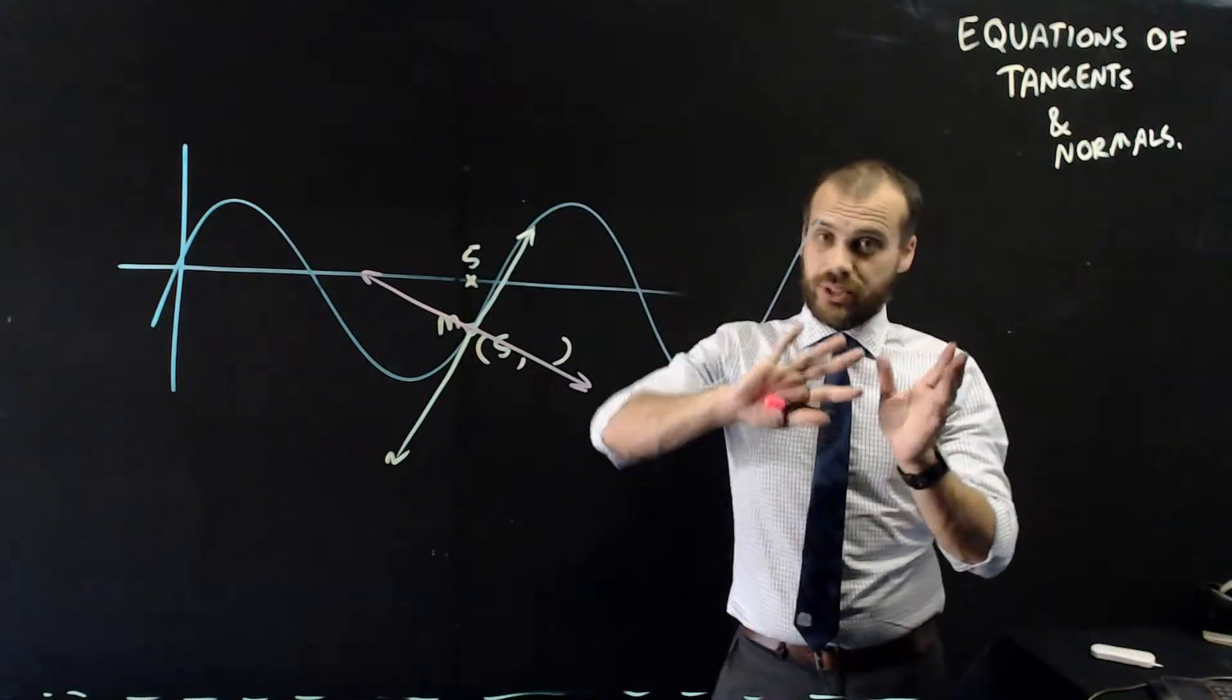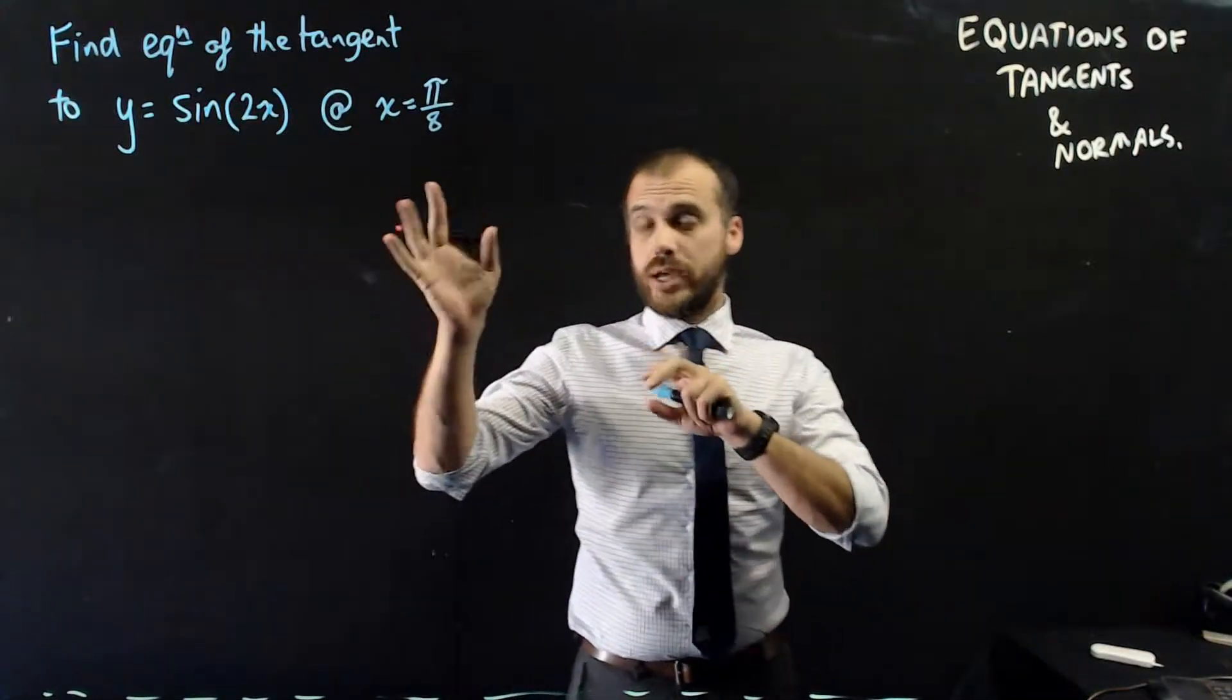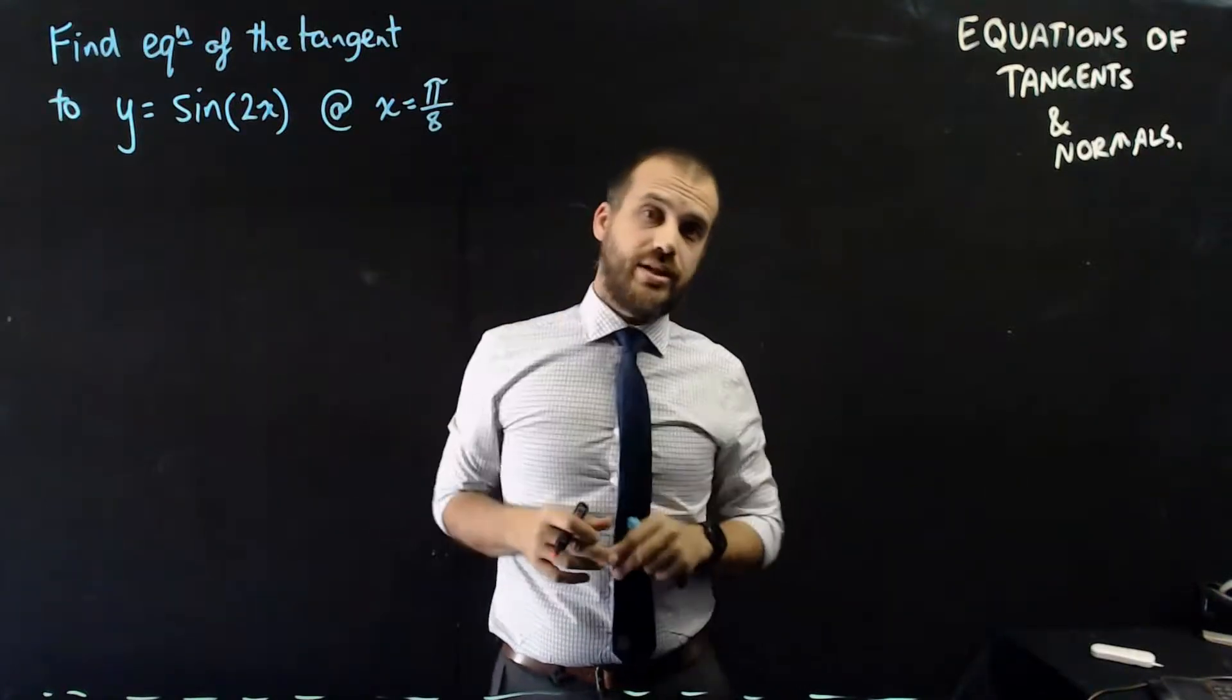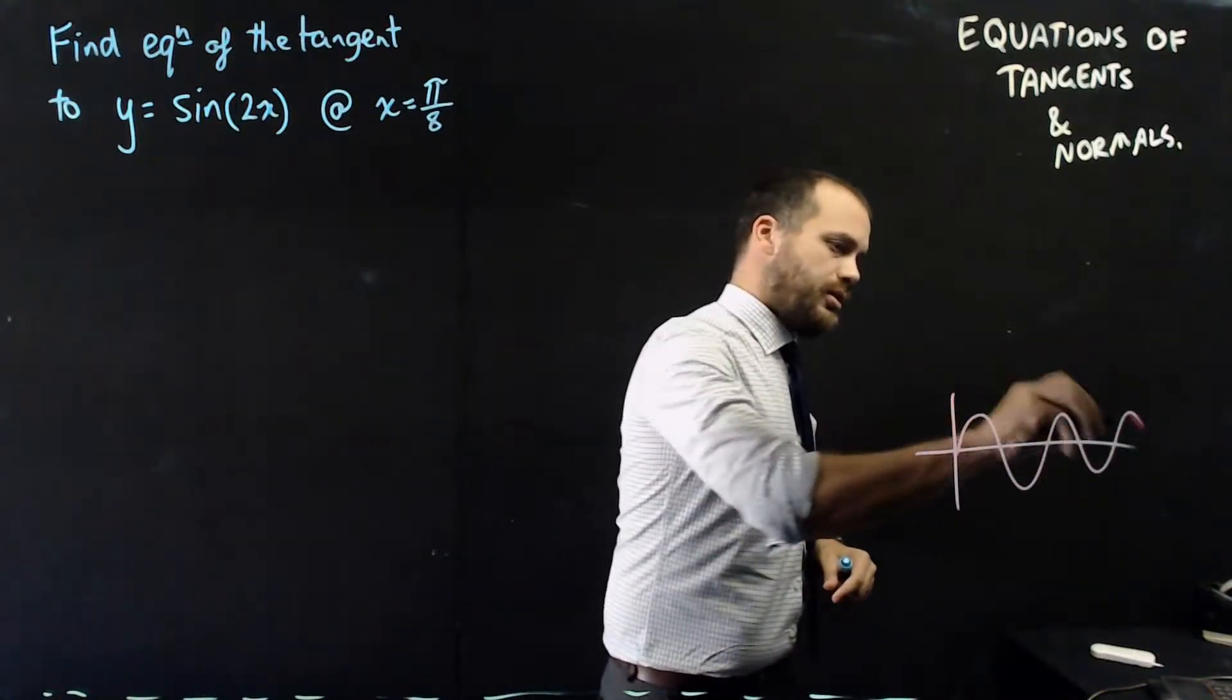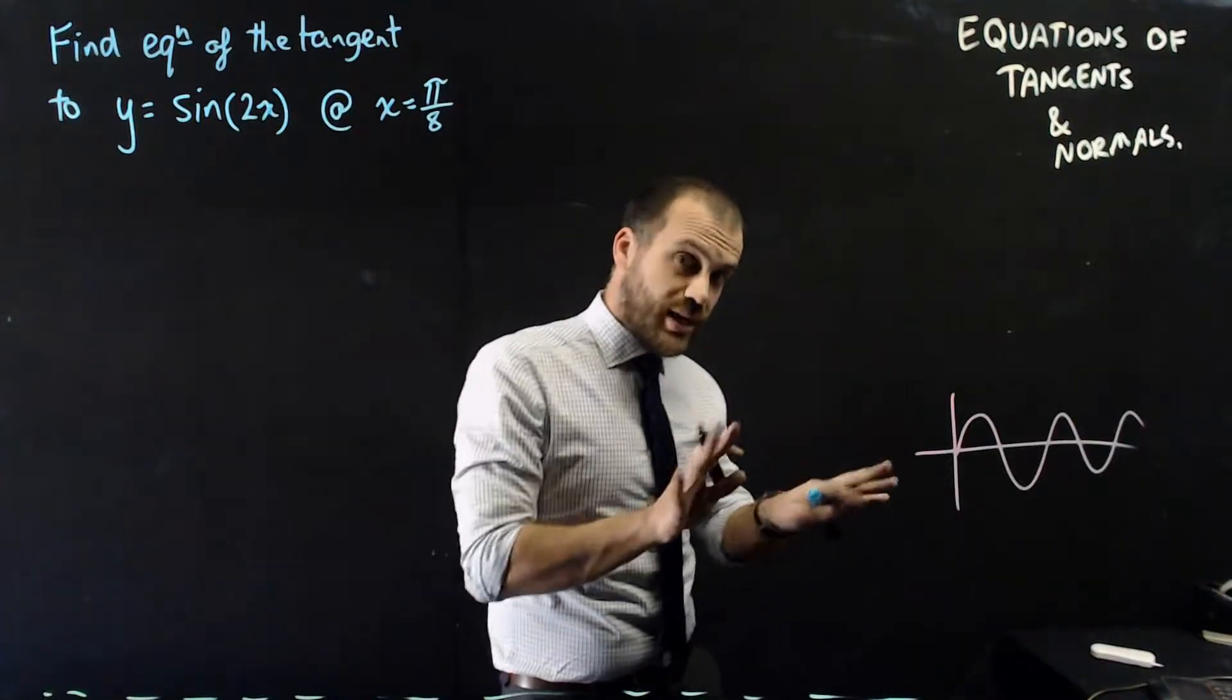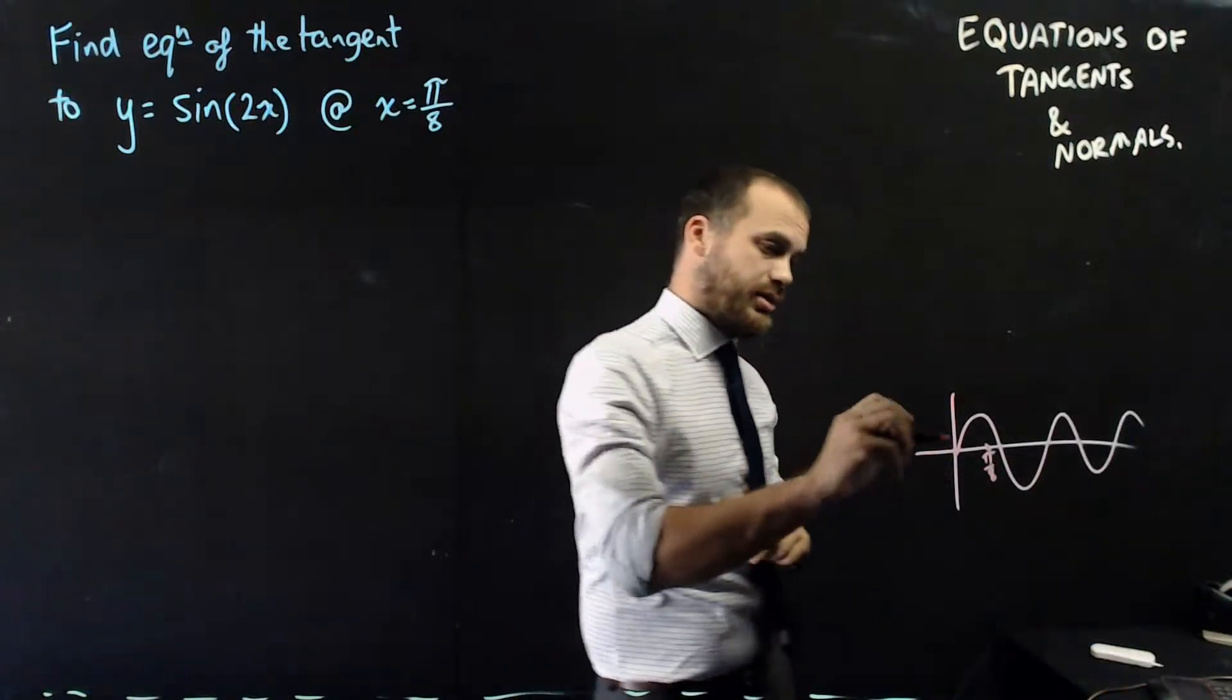Let's do a proper question. Here's my question. Find the equation of the tangent to y equals sine 2x at x equals π on 8. So, a little drawing. Sine 2x looks something like this. And now, we're trying to find the tangent at π on 8. I'm just going to pretend π on 8's there. I have no idea where π on 8 is.